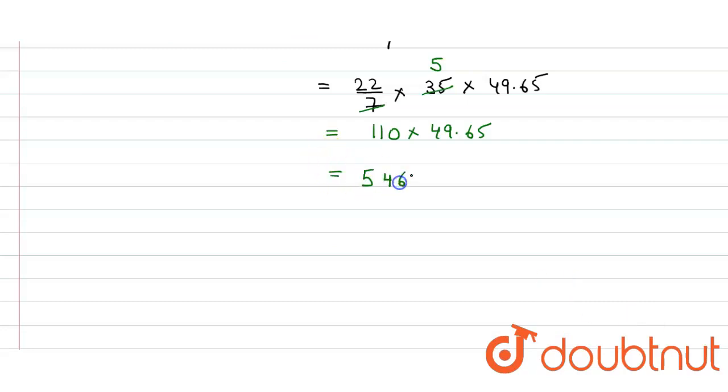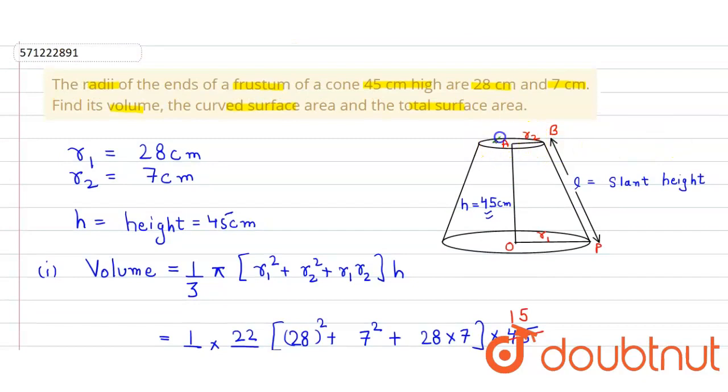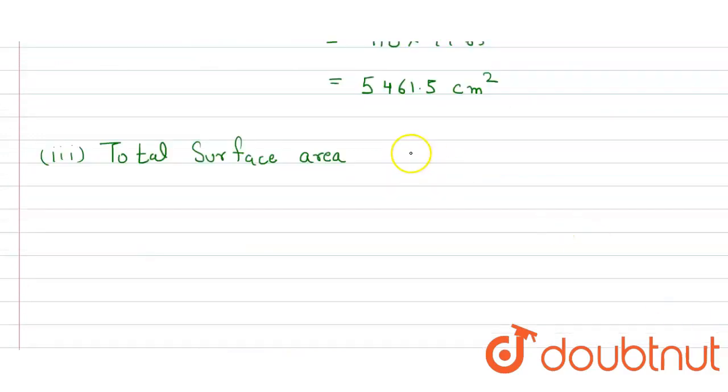And now in the third part, which is total surface area. So the total surface area will be equal to curved surface area plus πr₁² plus πr₂².